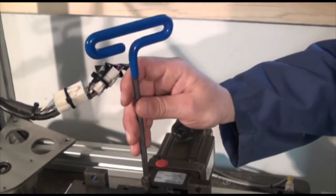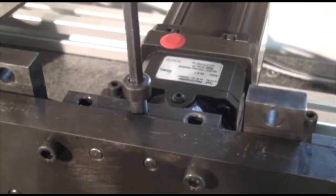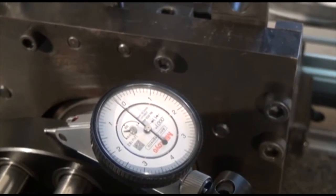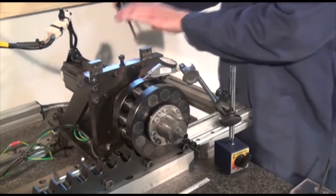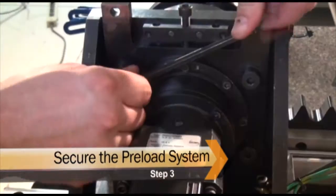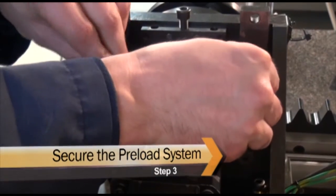Start turning the adjustment screw on the top of the preload plate until the needle shows four to five ten-thousandths of an inch. Tighten down the shoulder screws on the preload plate to secure its position.